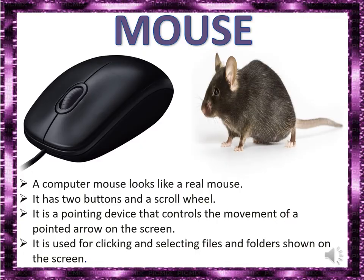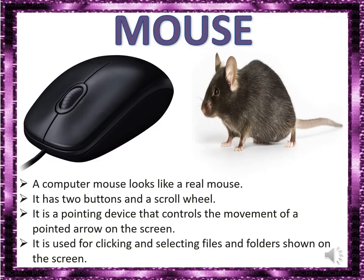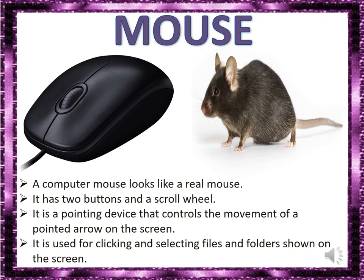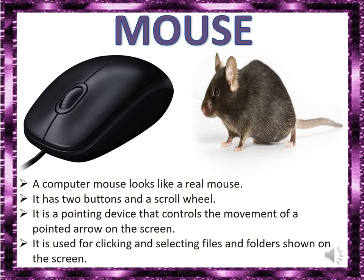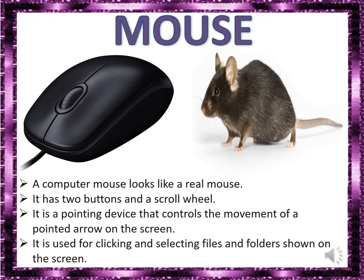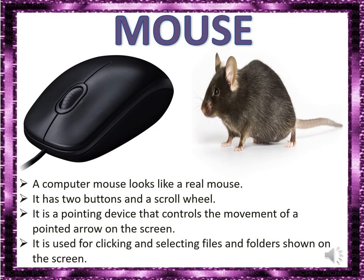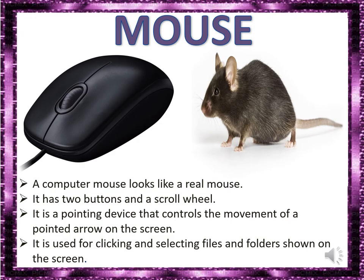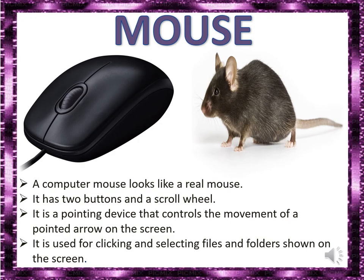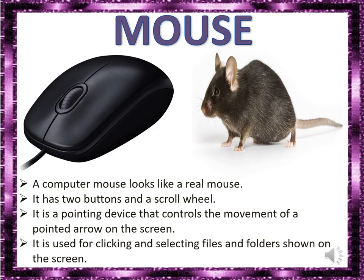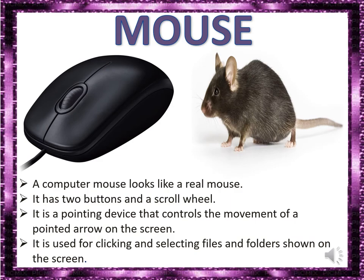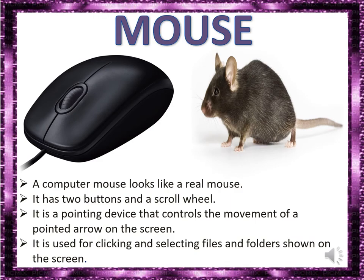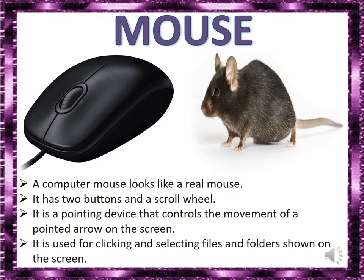Mouse. A mouse looks like a real mouse. It has two buttons and a scroll wheel. It is a pointing device that controls the movement of a pointed arrow on the screen. Mouse is used for clicking and selecting files and folders shown on the screen.